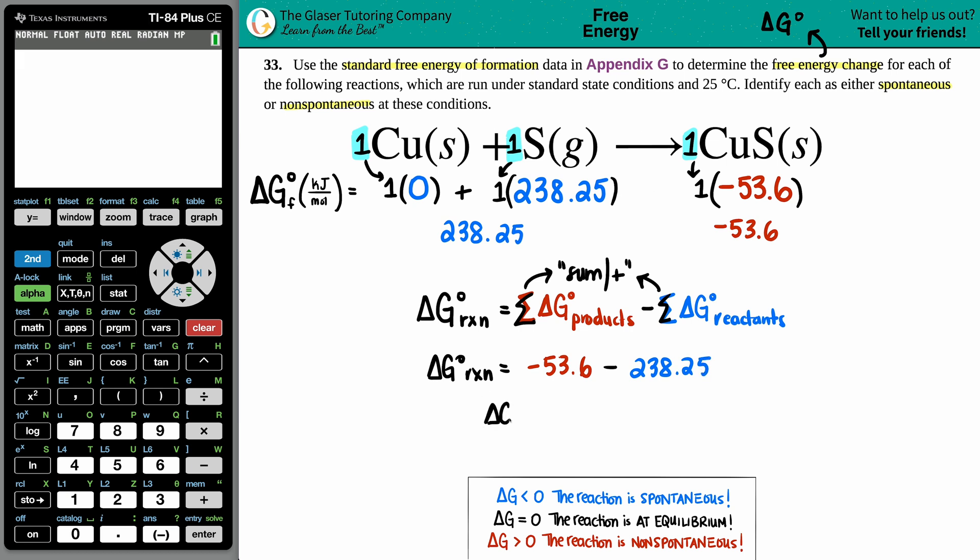Okay, so now here comes calculator time. Delta G, the change of the free energy in the whole reaction is, calculator time: negative 53.6 minus 238.25. Enter.